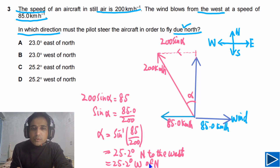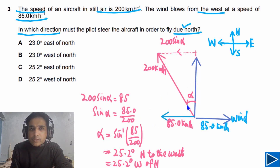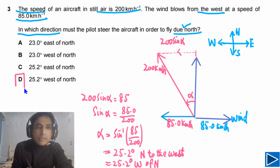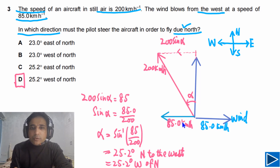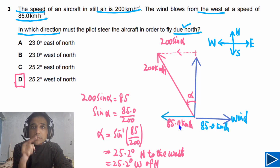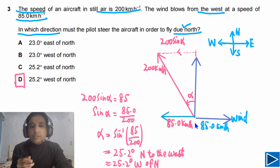So this is 25.2 degrees west of north, and the answer for this question is T. The key concept is that the component of the aircraft's velocity must be in the opposite direction to the wind, with the same magnitude as the wind speed of 85 km/h. Then we can calculate the value of the angle.